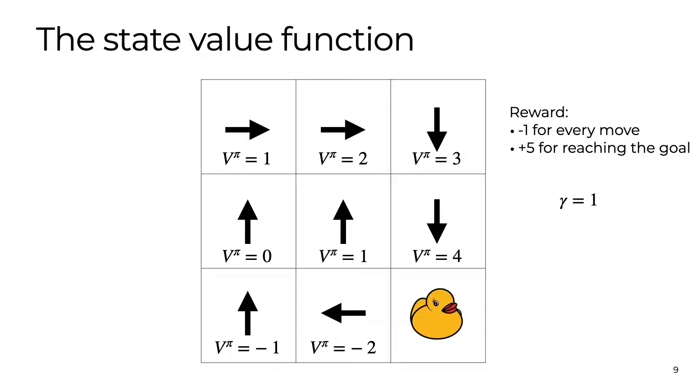If we look at the value function we just calculated, we can already see that our policy is not very good since we are taking actions that do not yield the highest possible value at the subsequent state. Using this intuition, we can update our policy by using this value function and then greedily taking actions that maximize the value at the next state.